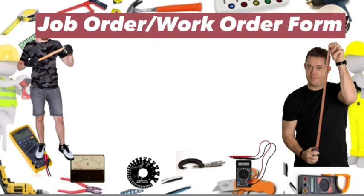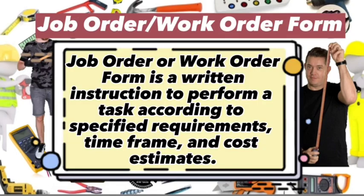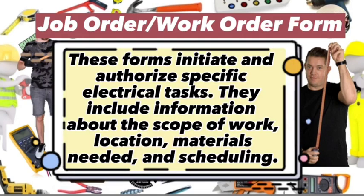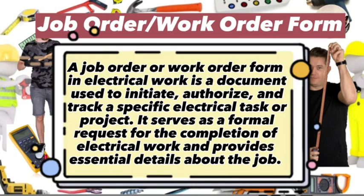Next is the job order or work order form. A job order or work order form is a written instruction to perform a task according to specified requirements, time frame, and cost estimates. These forms initiate and authorise specific electrical tasks. They include information about the scope of work, location, materials needed, and scheduling. A job order or work order form in electrical work is a document used to initiate, authorise, and track a specific electrical task or project, serving as a formal request for the completion of electrical work and providing essential details about the job.